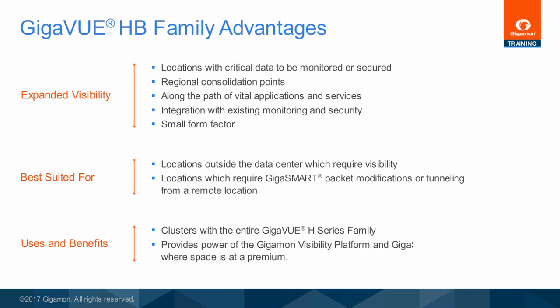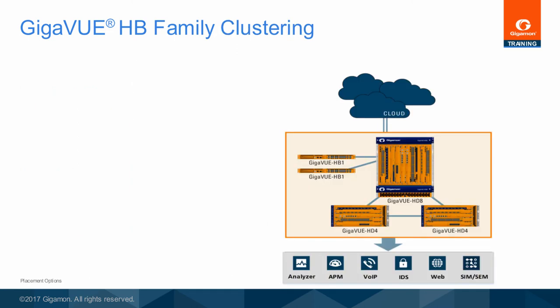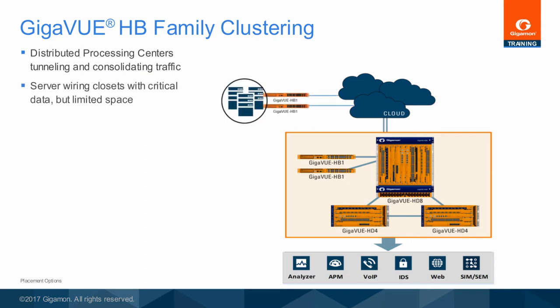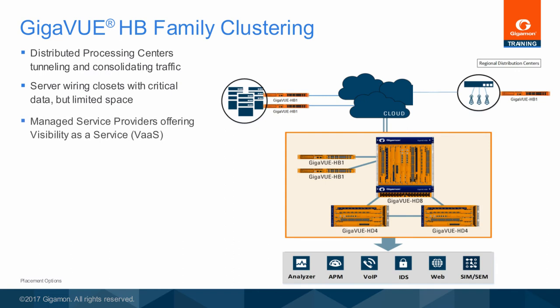Additional uses and benefits: the Gigaview HB1 clusters with the entire family of Gigaview H-series nodes and provides the power of the Gigamon visibility platform and GigaSmart packet processing where space is at a premium. The Gigaview HB1 may be used in any location where a Gigamon visibility platform node is required. It may be included in any H-series cluster. It is perfect for distributed, remote, or space-challenged locations. With Role-Based Access Control (RBAC), the Gigaview HB1 may be used for multi-tenant environments and even for visibility-as-a-service offerings. For almost any low-to-medium density requirement, the Gigaview HB1 offers a compelling and attractive suite of features and options. As a member of the H-series family, an installation may begin with the Gigaview HB1 and be combined with other H-series nodes into an installation of any size — local, remote, or a hybrid of the two.